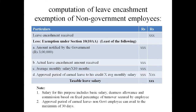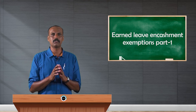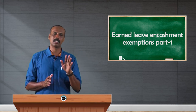To recap, under section 10(10AA), the least of the four amounts is exempt. These are: the statutory limit, actual leave encashment, 10 months' salary, and one month's salary multiplied by the leave at credit. For this purpose, salary means basic salary, dearness allowance, and commission based on a fixed percentage of turnover secured by the employee. Regarding the approved period of credit, the maximum is 30 days in a month — so if he has 33 months credit, it should be restricted to 30 days.